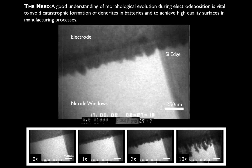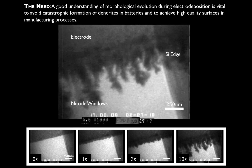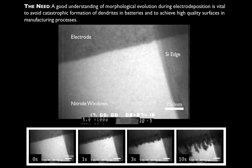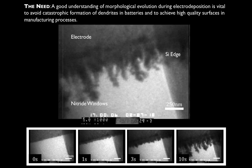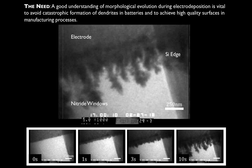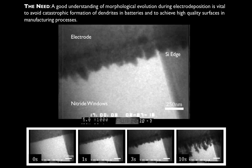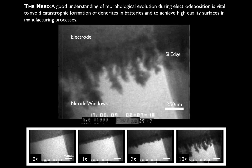We want to look at what happens during electro deposition. We use copper as a model system because it's been well studied for interconnects in electronic devices and for other different plating techniques. What we really want to probe is what causes different morphology instabilities such as dendrite formation, which can be catastrophic when you're recharging your batteries.